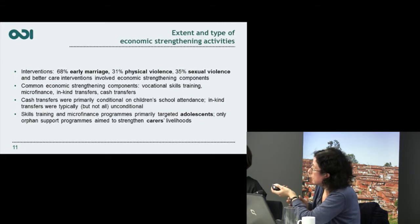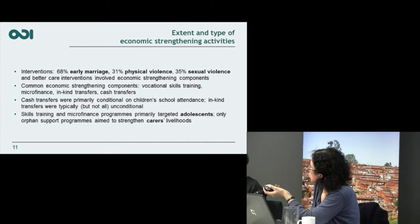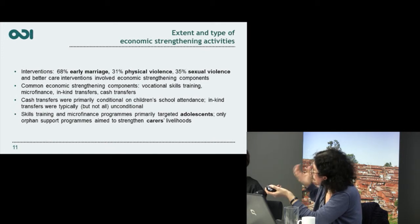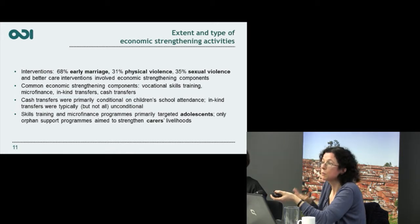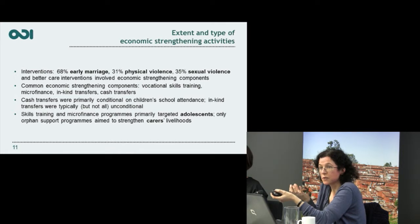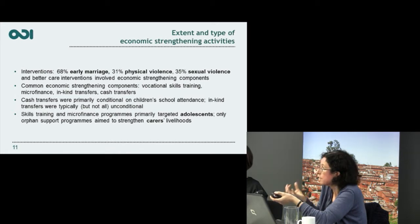We found it was very much more common for the early marriage interventions to have economic strengthening components than interventions addressing other issues. This reflects the strong consensus that poverty is an important driver of early marriage, whereas on other issues there's much less consensus. On physical violence, pretty much all the projects with economic strengthening components were ones trying to prevent young people getting involved in gangs and community- or neighbourhood-level violence, or helping young people exit from those — not, for example, combining cash transfers with educating parents not to hit their children.